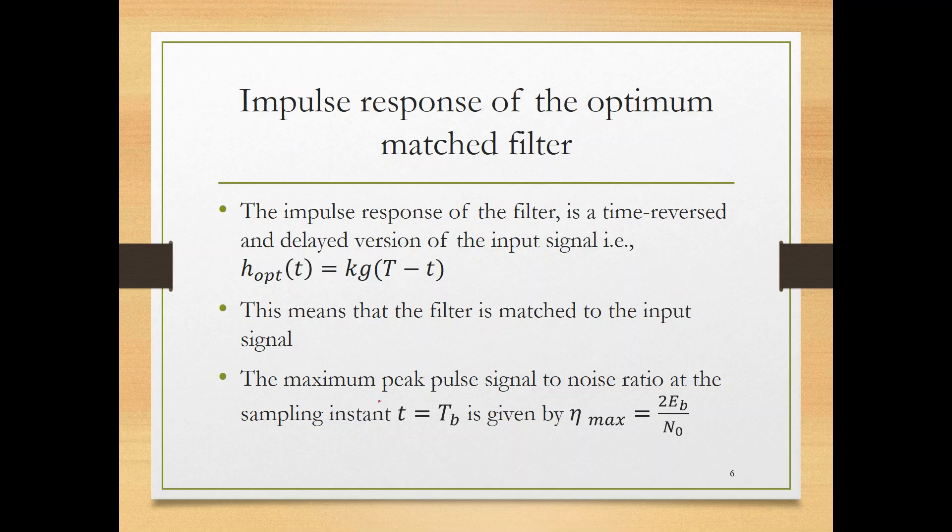By examples, we will understand it much better. You have the optimal filter written in terms of the transmit filter G of minus T. This minus reflects it over y-axis. And then you shift it by T and you multiply it by a certain coefficient. This means that the filter is matched to the input signal. The maximum peak pulse signal to noise ratio at the sampling instant T equal TB is equal to 2EP over N naught, where EP is the energy per bit, and N naught is the power spectral density of the noise, and 2 is actually coming from N naught over 2.